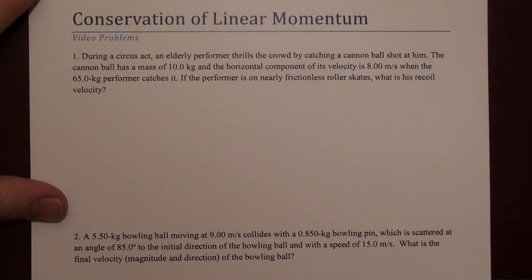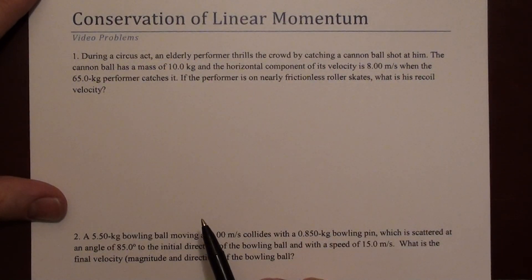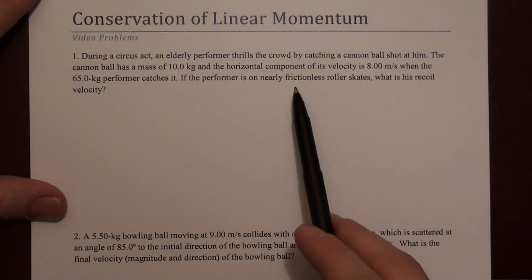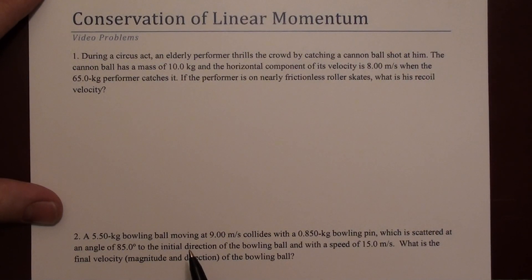They give us the mass of the cannonball, the horizontal component is 8 meters per second, and the performer is on frictionless roller skates. The question is, what is the recoil velocity of the performer?